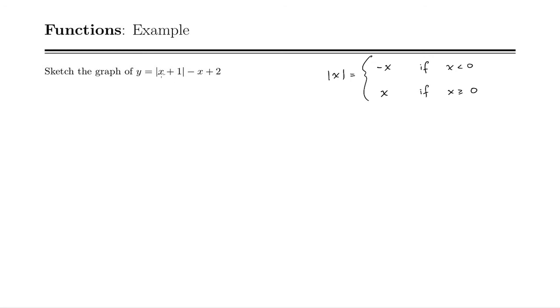So we have an absolute value here of x plus 1. We're going to use our definition, absolute value of x plus 1. Well, that is a piecewise function. It's negative x plus 1 if x plus 1 is less than 0, and it's just x plus 1 if x plus 1 is greater than or equal to 0. I can rewrite this if I'd like.